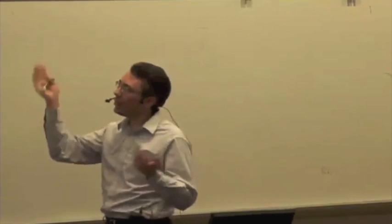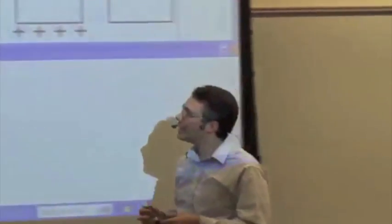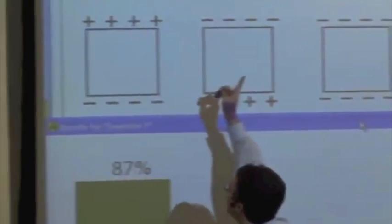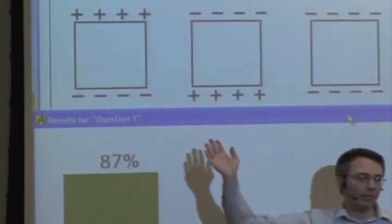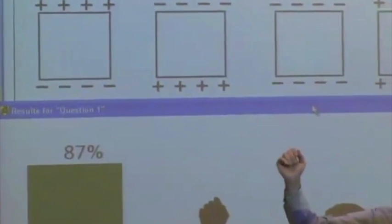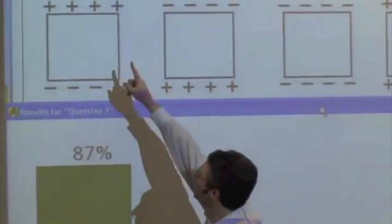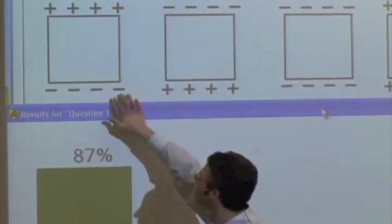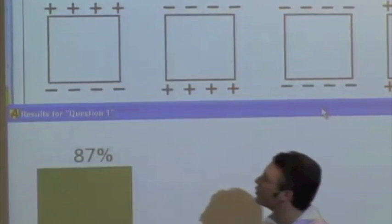The number of charges indicates essentially how much charge there is. To indicate that it's still neutral — something neutral has a net charge of zero — we roughly draw four negative charges and four positive charges to show that there's roughly the same amount of negative as positive charge on the entire surface. So that's just polarization of a conductor.